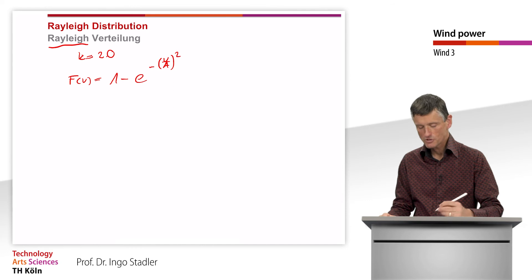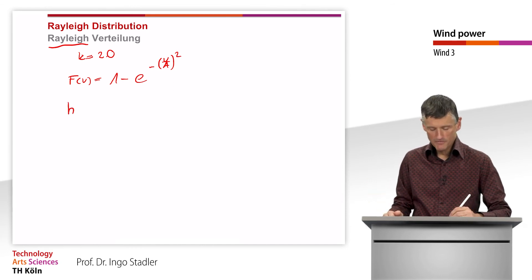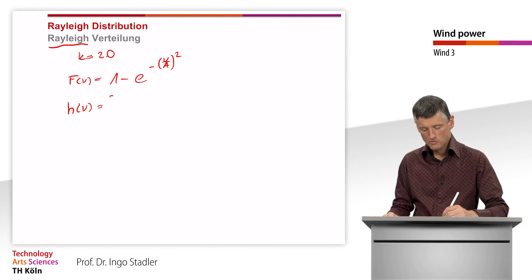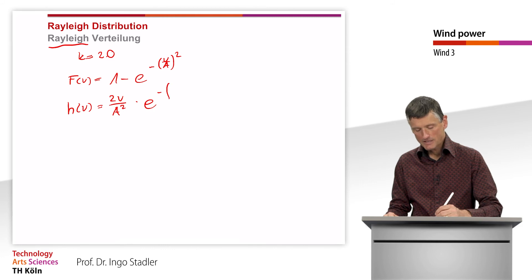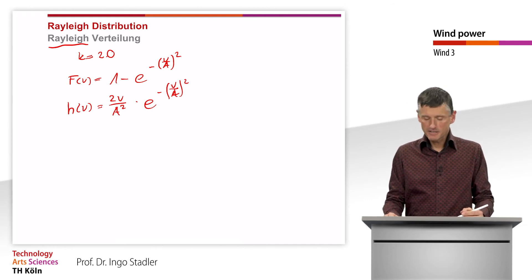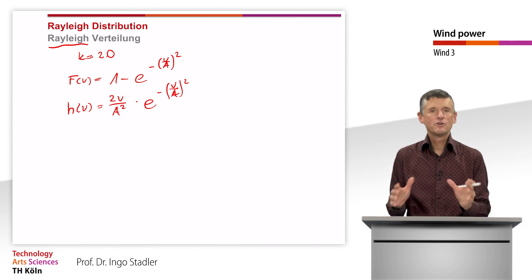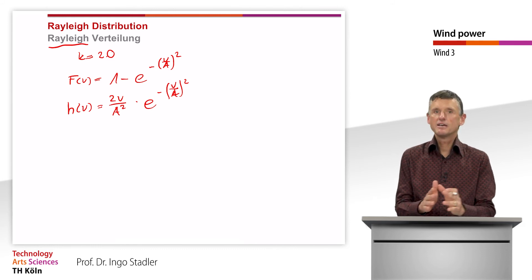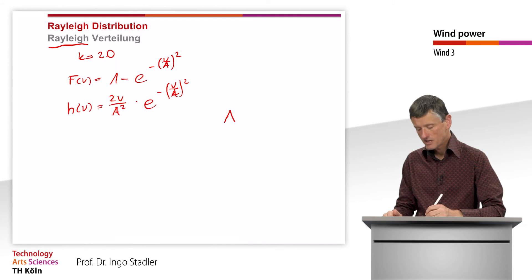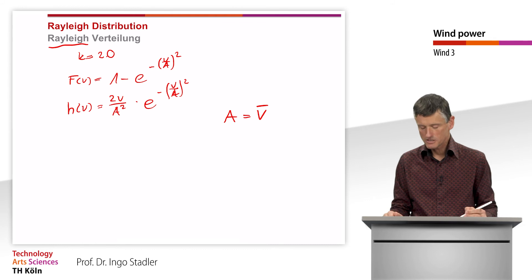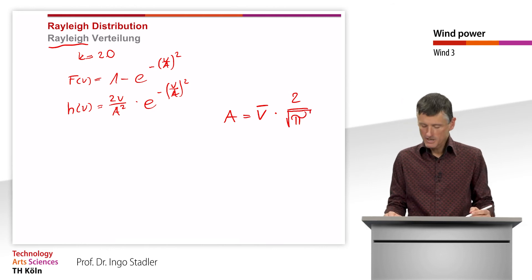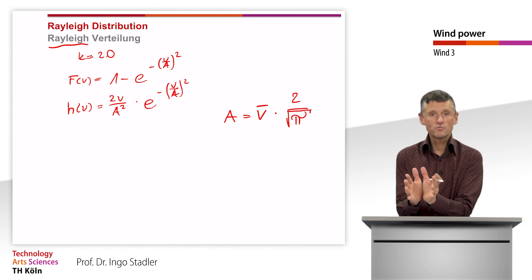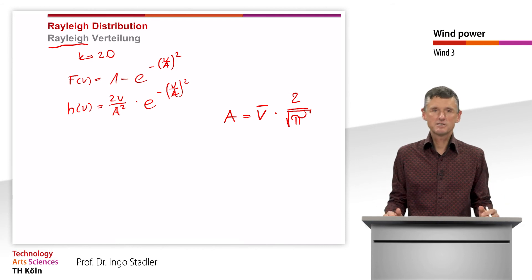The Rayleigh distribution cumulative frequency is: F(v) = 1 − exp(−(v/A)²), since k = 2. The density function is: h(v) = (2v/A²) · exp(−(v/A)²). The good thing is that for a Rayleigh distribution we know the relation between the scaling factor A and the mean wind velocity: A = v̄ · √(4/π). With that we get a distribution function from the commonly known mean wind speed — in this case the Rayleigh function.